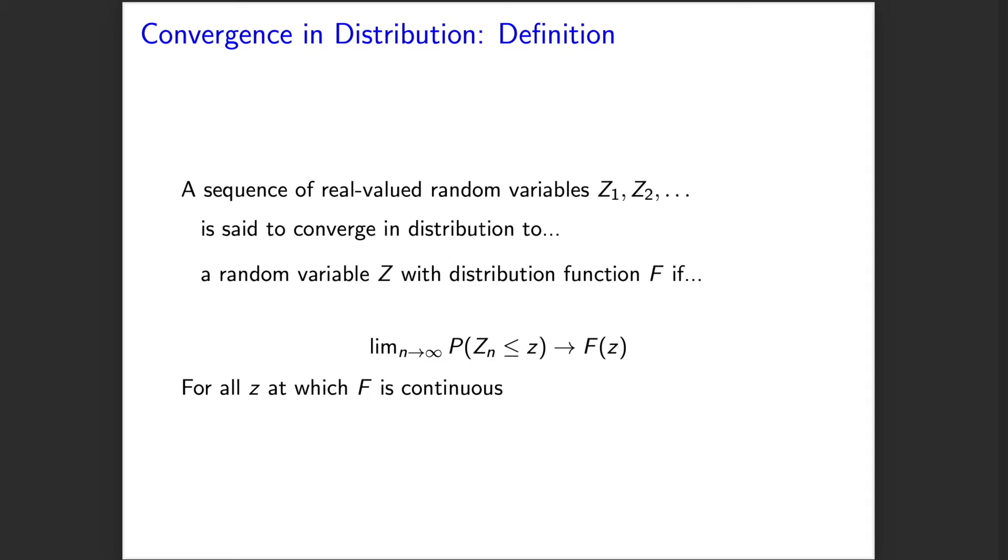If we have a sequence of real-valued random variables Z₁, Z₂, etc., we say that it converges in distribution to a random variable Z with distribution function F if, for any candidate threshold lowercase z, the probability that Zₙ, the elements of our sequence, are less than or equal to z converges to the probability that capital Z, that limiting random variable, is less than or equal to lowercase z. And this doesn't have to happen everywhere, it just has to happen at all thresholds lowercase z at which our limiting random variable capital Z has a continuous CDF.